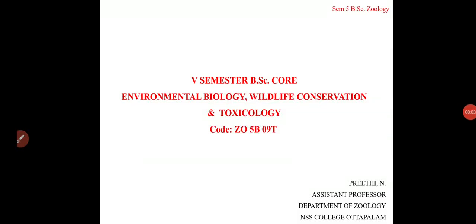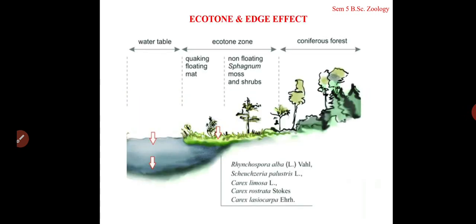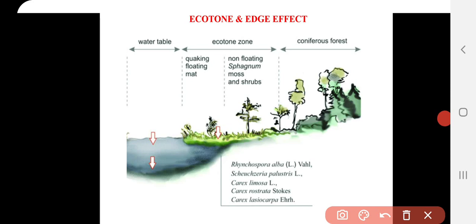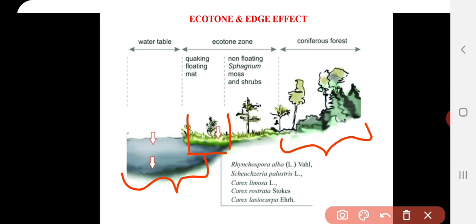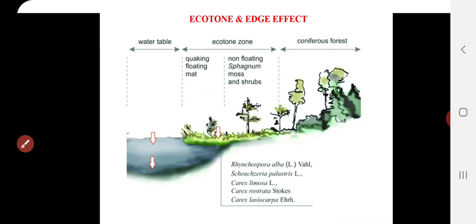Today we are coming to the last part of community ecology — ecotone and edge effect. In this figure you can see there are two communities: one is the coniferous forest and another is the aquatic body. You can see a part which is actually formed at the junction of the two different communities — the forested community and the aquatic community. This junction is what is the ecotone.